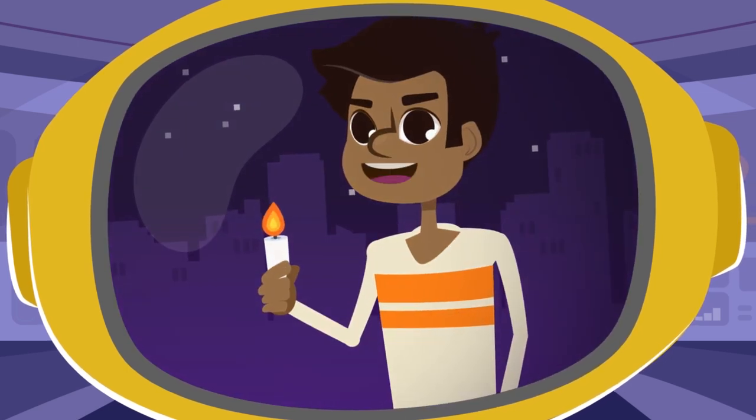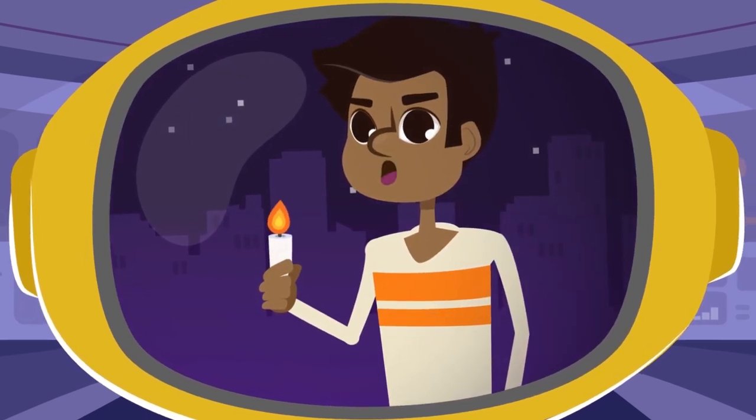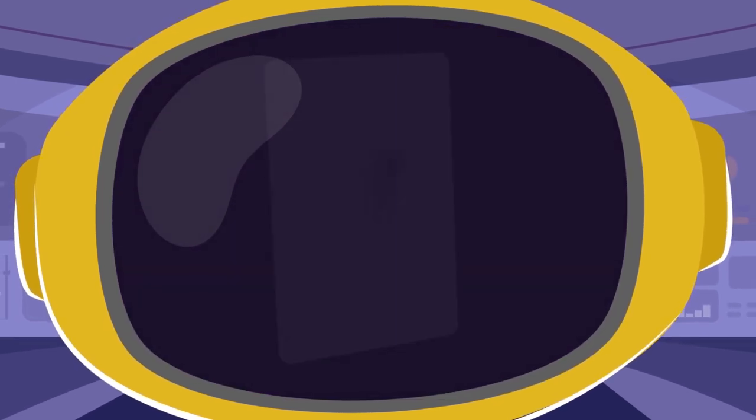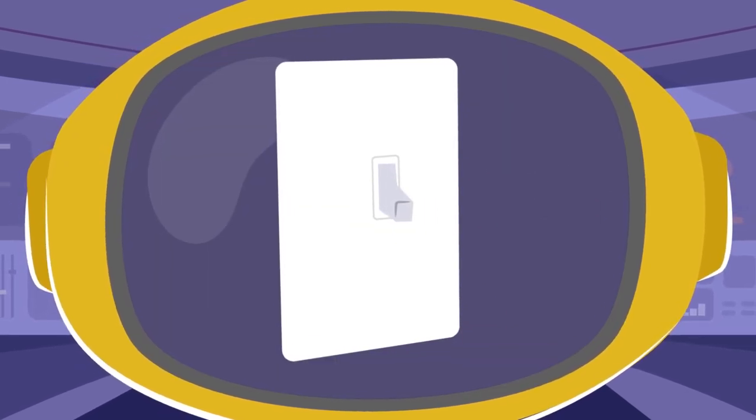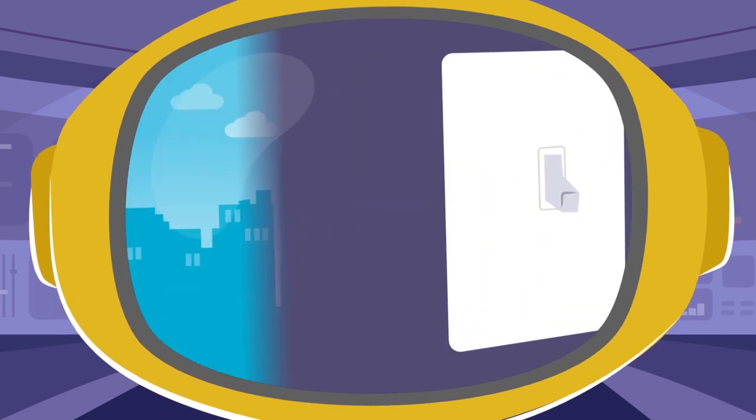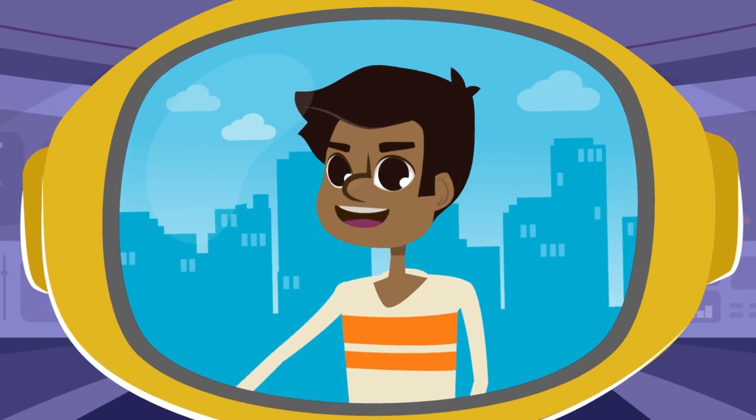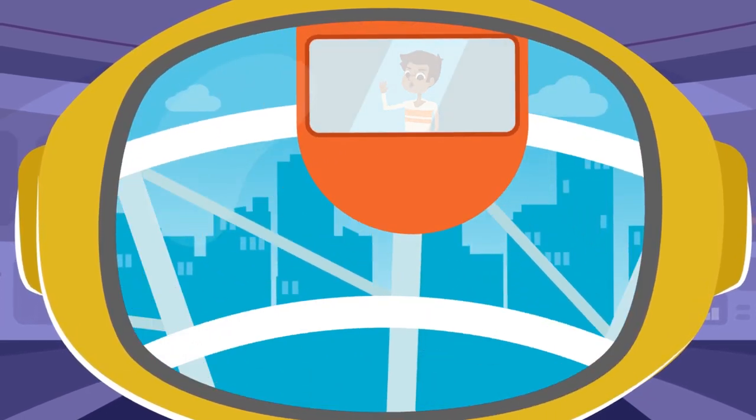Before electricity was invented, people used candles for light. Now with just a push of a button we can light up our houses. Not only that, with electricity we can power trains and amusement park rides.